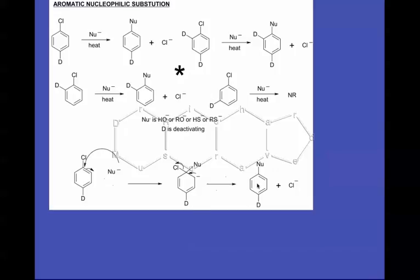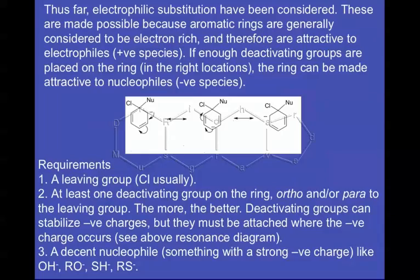Let's look at why it's necessary to have deactivating groups in specific positions on the aromatic ring. The story is told by this resonance diagram. You can see this negative charge can move around the ring, but it only ends up in certain positions: ortho to the chlorine, para to the chlorine, and again ortho to the chlorine.